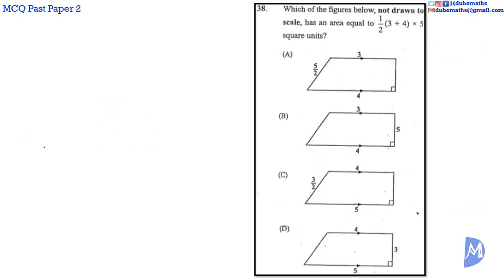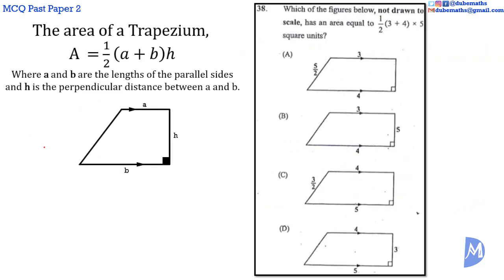Question 38. The area of a trapezium is equal to 1/2(A + B) multiplied by H, where A and B are the lengths of the parallel sides and H is the perpendicular distance between. We are given that the area is equal to 1/2(3 + 4) multiplied by 5. Therefore, A is equal to 3, B is equal to 4, and H is equal to 5. The answer is B.